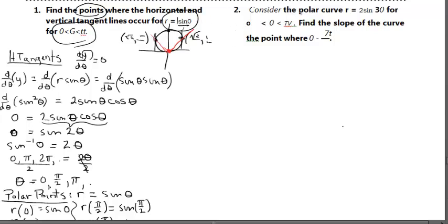Picking up where we left off, let's consider the polar curve given. Let's find the slope of the curve at the point where theta equals pi over four. So we need to find the slope.